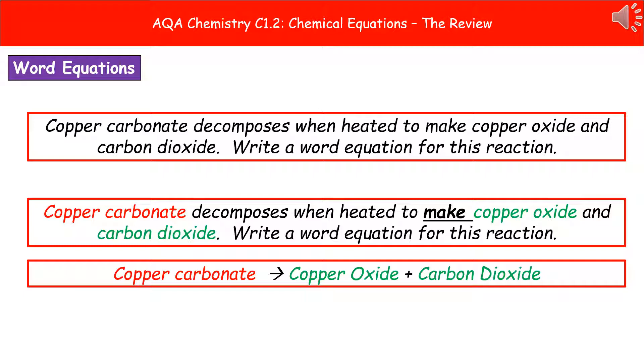As soon as you've identified those key bits of information, all you need to do is copy those names onto the answer line. Put an arrow between your reactants and your products and a plus between anything that's more than one on each side. So you can see copper carbonate with an arrow because that's where it's making copper oxide plus carbon dioxide. If you do that, you get the marks every time.